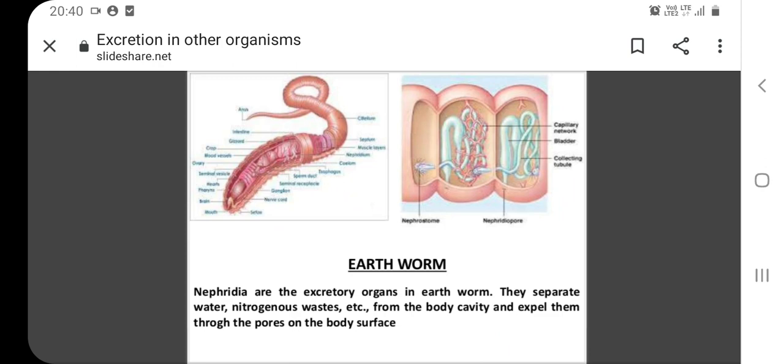Flame cells are present in the helminths. Flame cells consist of two tubules connected to a highly branched duct system. These cells in the tubule are called flame cells or protonephridia...